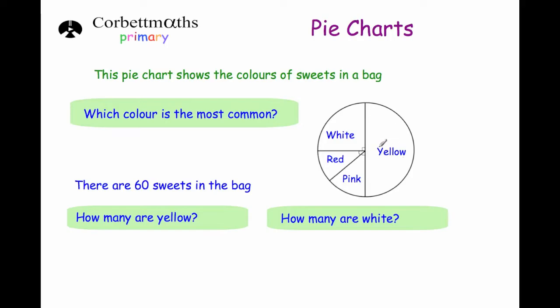So we've got yellow sweets, white sweets, red sweets and pink sweets. And the first question says which colour of sweet is the most common? As you can see yellow has got the biggest section of the pie chart, that means that yellow is the most common sweet.